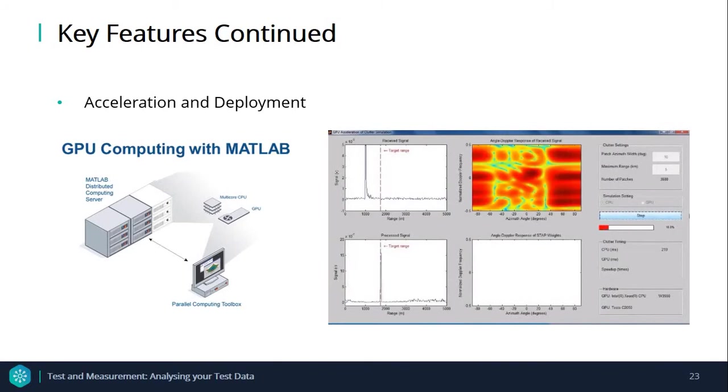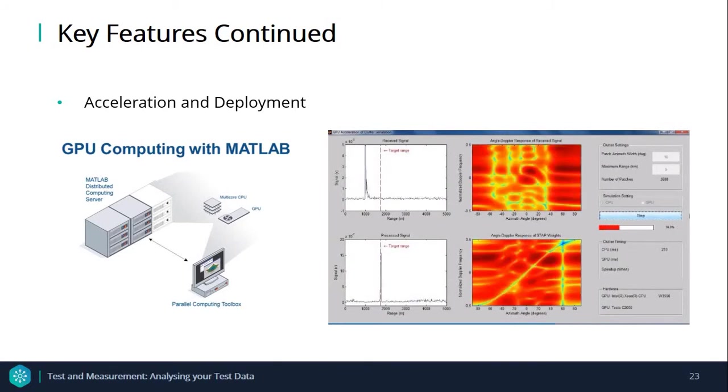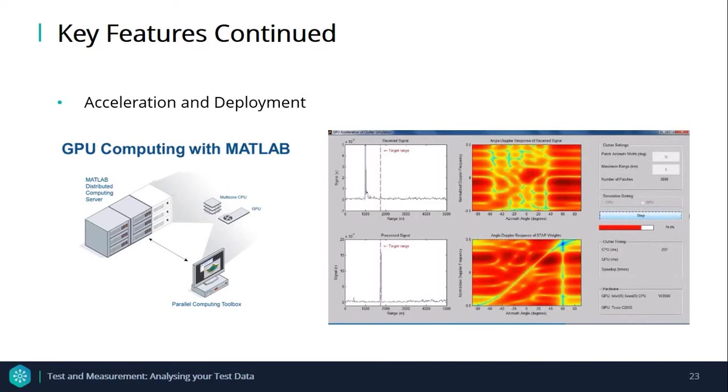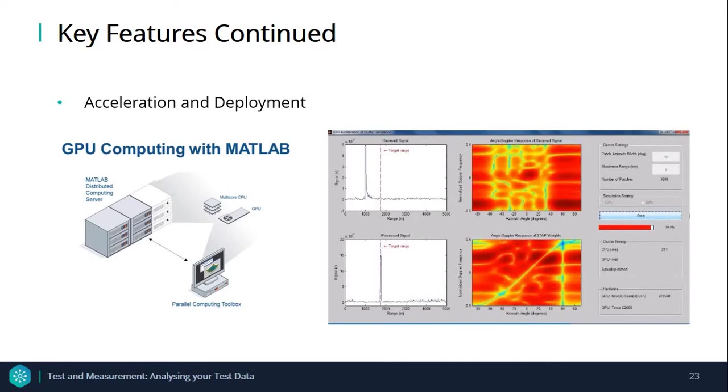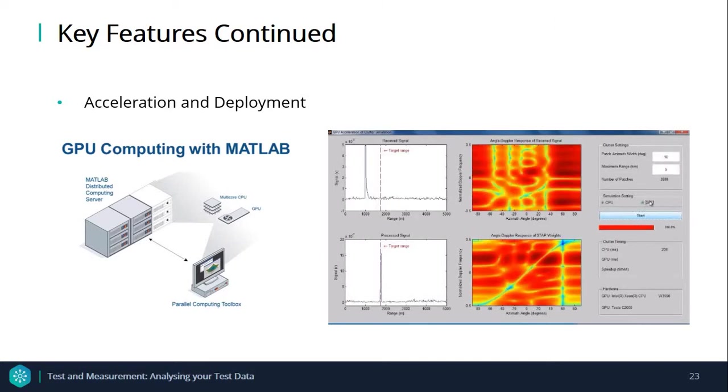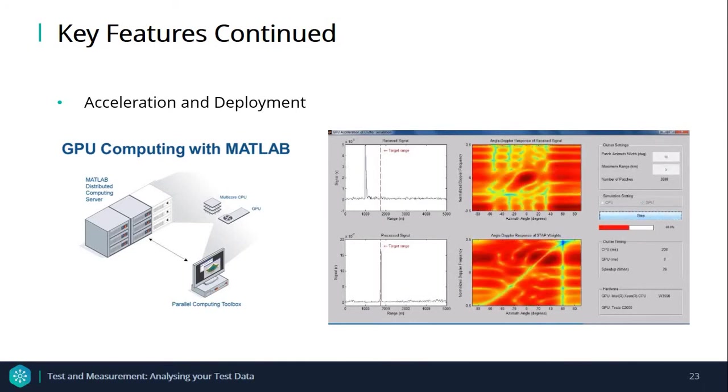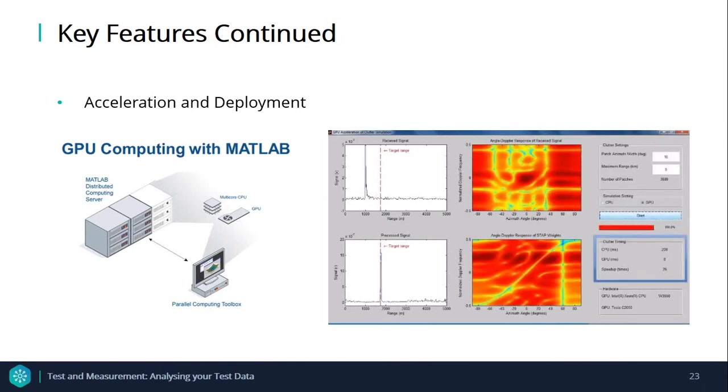To take advantage of the performance benefits offered by graphics processing units, many image processing functions are GPU enabled. To accelerate computationally intensive workflows, use the Parallel Computing Toolbox to improve performance with GPUs and multicore processors. You can see in the video that using a GPU really speeds up processing.